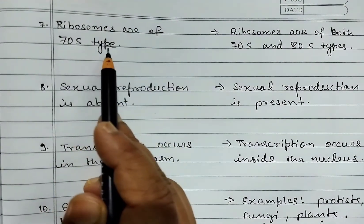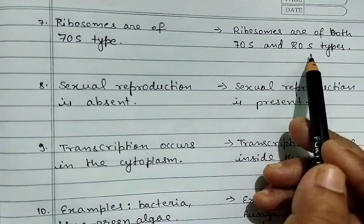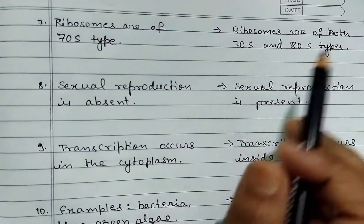Seventh, ribosomes are of 70S type in prokaryotic cell. In eukaryotic cell, ribosomes are of both 70S and 80S type.